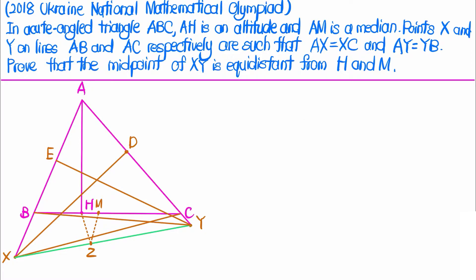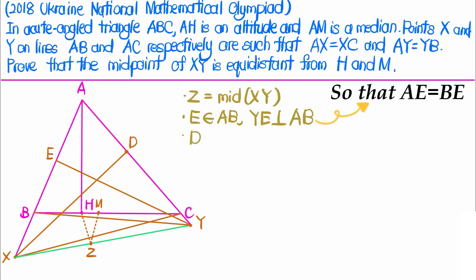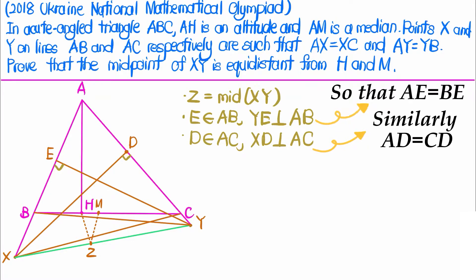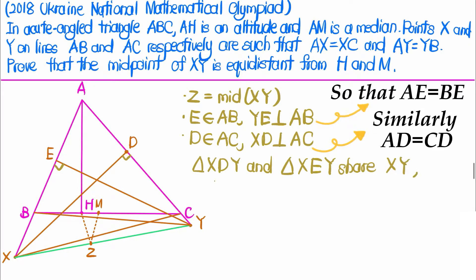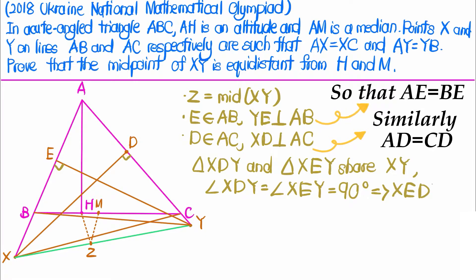To begin, I want to define three points. Z is the midpoint of XY. E is a point on AB such that YE is perpendicular to line AB. D is a point on AC such that XD is perpendicular to AC. So these two angles are 90 degrees. Since triangles XDY and XEY share the line XY, and angles XDY and XEY are both 90 degrees, the quadrilateral XEDY is cyclic.